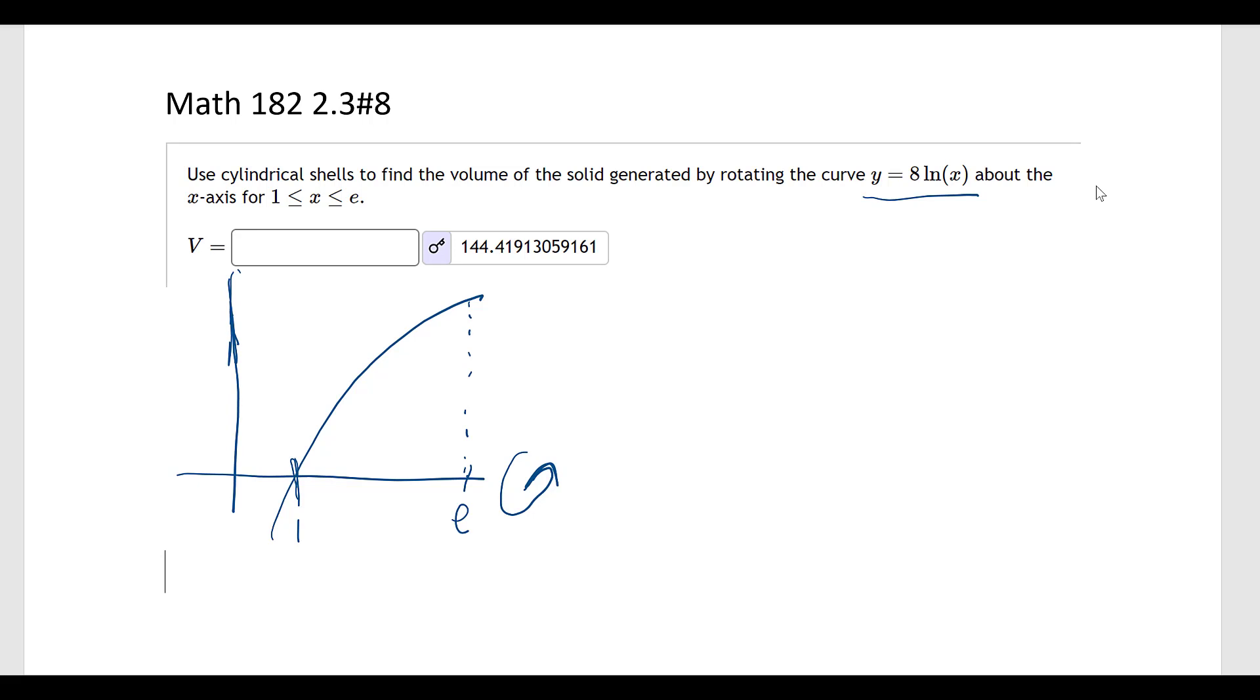Let's also look at the x values - what are the y values? y equals 8 natural log of 1, which is 8 times 0, which is 0. And y equals 8 natural log of e is 8 times 1, which is 8. So it's going from 0 to 8 here on the y.